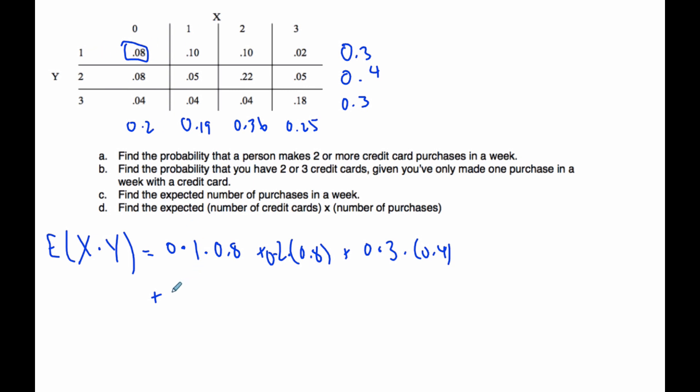Plus 1 times 2 times 0.05, 0.05, careful with the decimals, plus 1 times 3 times 0.04, and so on. I'm going to pause it and you'll see the rest.